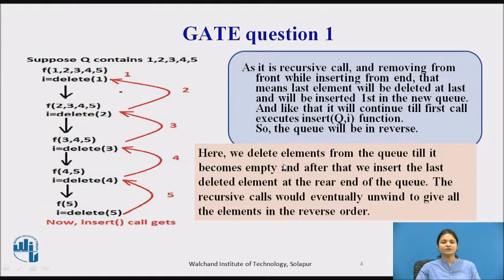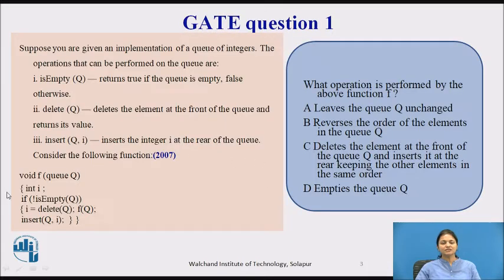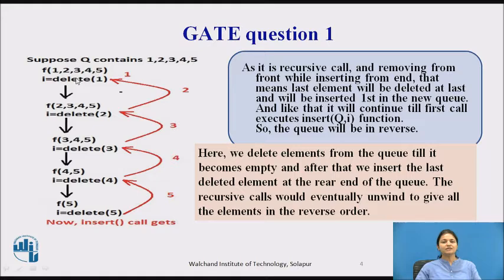Now we will see how this function operates. We have the queue: 1, 2, 3, 4, 5. As we can see, first we check if it is an empty queue. If not, we delete that queue element, keep it in i, then check f(q), and then insert_q(i). What we are doing is deleting elements from the queue until it becomes empty. We check if it is not empty, then delete the element, and after that insert the last deleted element at the rear of the queue.